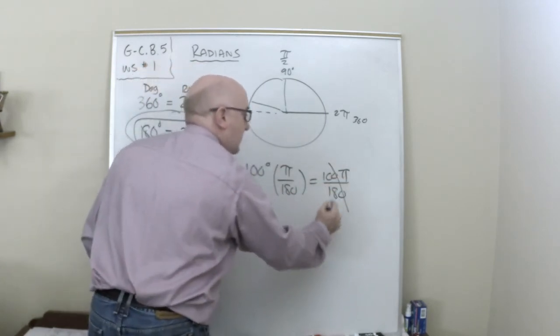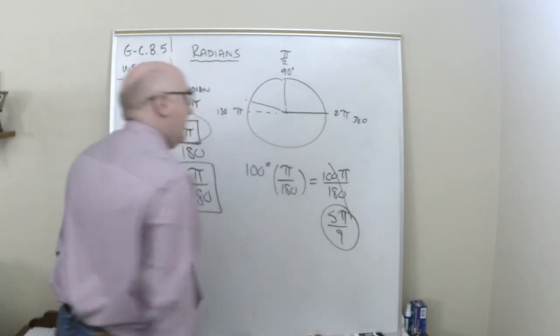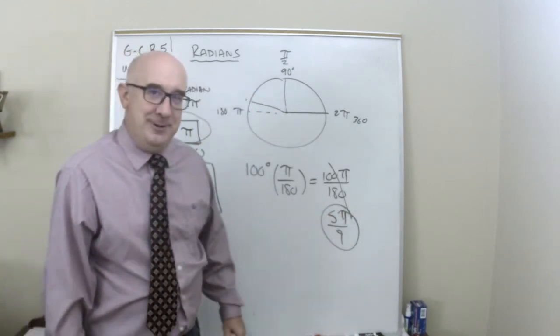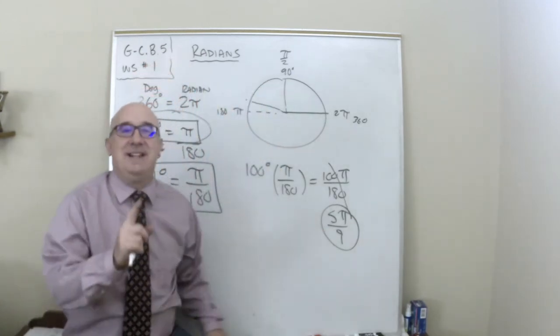Now, I can simplify this. This would be 5 pi over 9. That is about 100 degrees. Let me talk to you about this for a second. So many things to talk about. I don't want to make this too long.